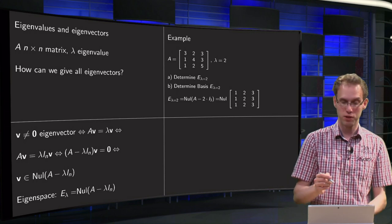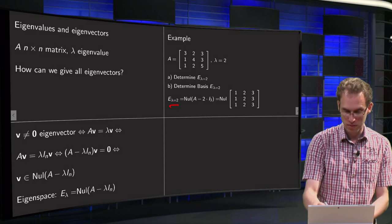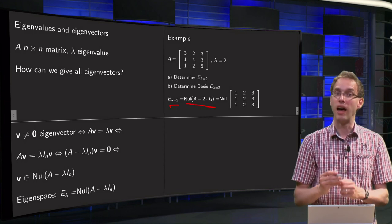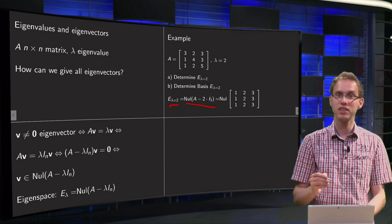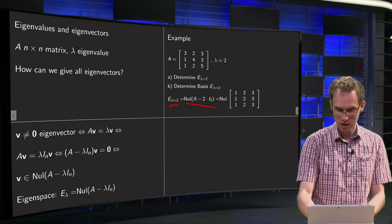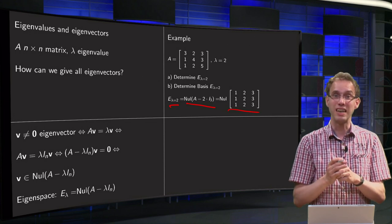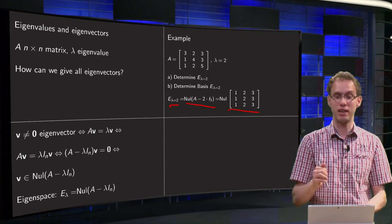So how do we find the eigenspace? The E lambda equals 2 is the null space of A minus 2 times the identity matrix. So A minus 2 times the identity matrix looks really easy: equals 1, 2, 3, 1, 2, 3, 1, 2, 3. So we have to find the null space of this second matrix and that will give us the eigenspace.